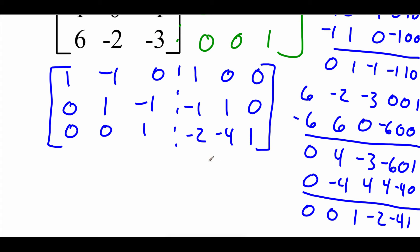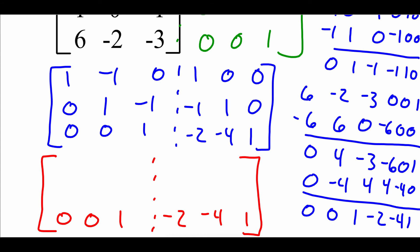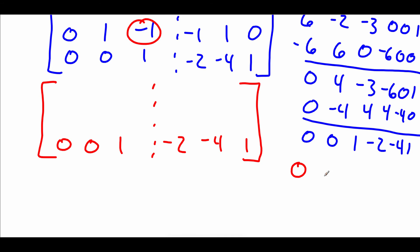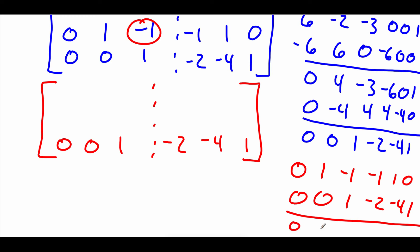This matrix is now in row echelon form, but we need reduced row echelon form. We fill in the bottom row as is: 0, 0, 1, negative 2, negative 4, 1. Working our way back up, we need to get rid of the negative 1 in the third column of the second row. Taking that second row — 0, 1, negative 1, negative 1, 1, 0 — and adding our bottom row 0, 0, 1, negative 2, negative 4, 1 gives us the new middle row: 0, 1, 0, negative 3, negative 3, 1.